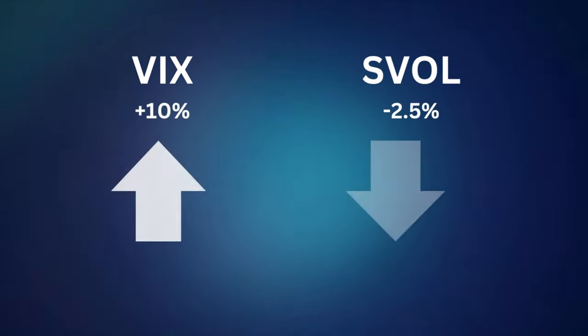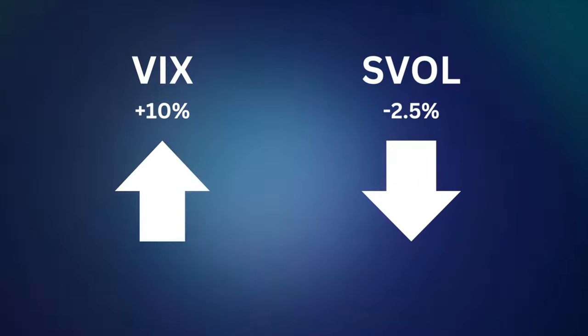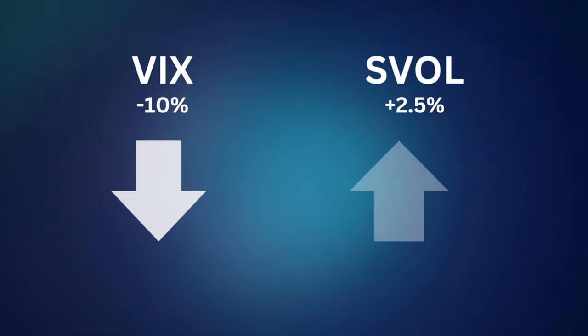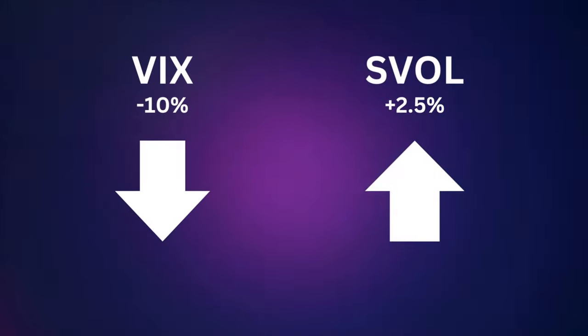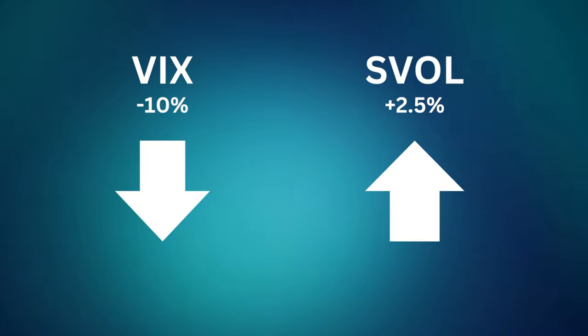This is the trading strategy of SVOL. If the VIX goes up 10%, SVOL should go down 2.5%, and vice versa — if the VIX goes down 10%, SVOL should go up 2.5%.